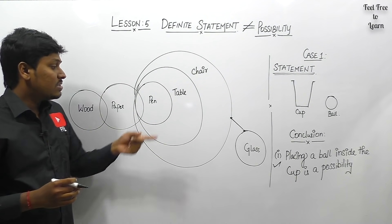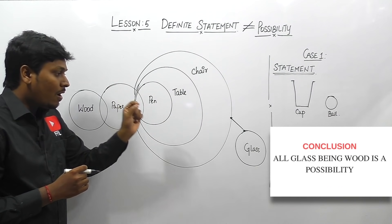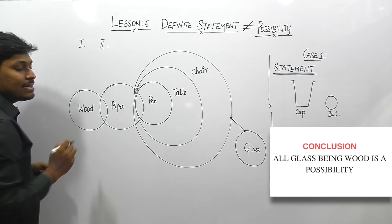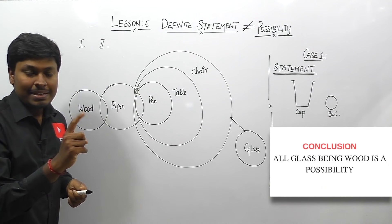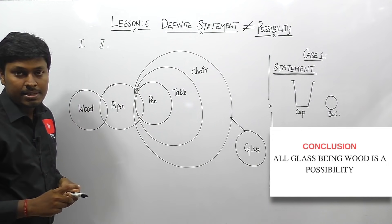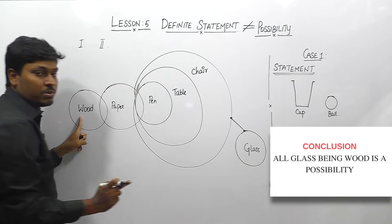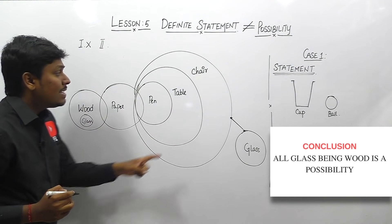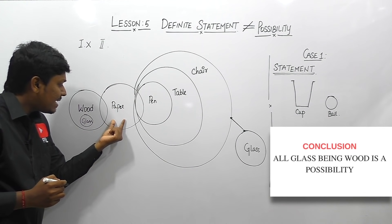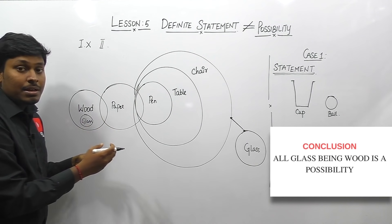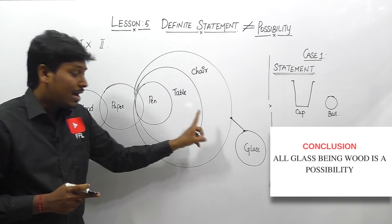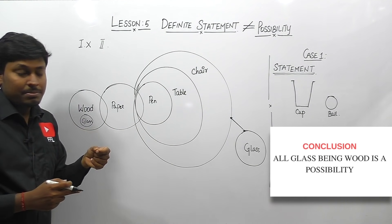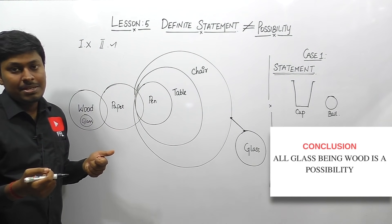Let me move to a question based on lesson three. Conclusion one: 'all glass being wood is a possibility.' In lesson three, for a possibility conclusion you draw two diagrams — a basic diagram and a possible diagram. If it is true in any one diagram, the answer is true. According to the basic diagram, there is no connection between glass and wood, so it does not follow. But in the possible diagram, we can connect glass with wood, making 'all glass being wood' possible. So the conclusion is true.